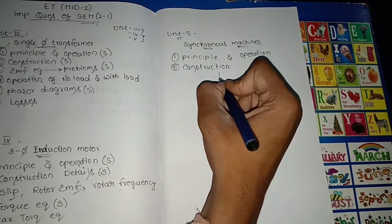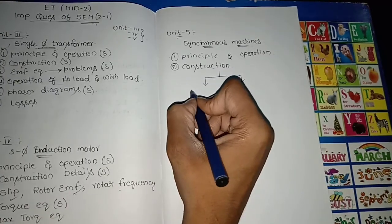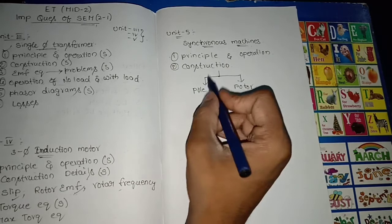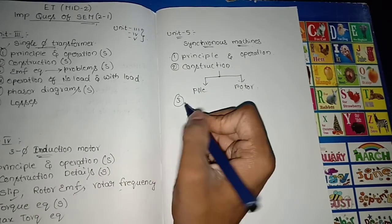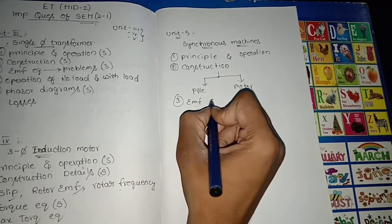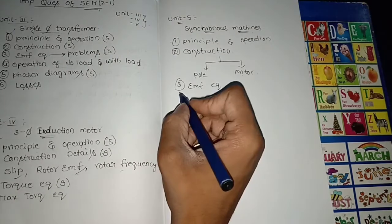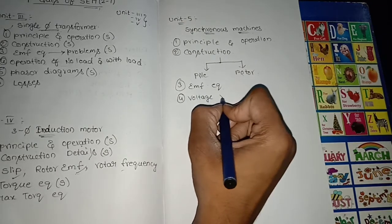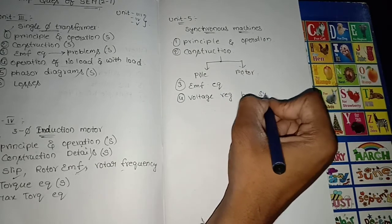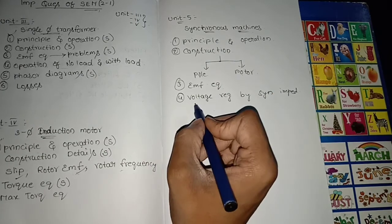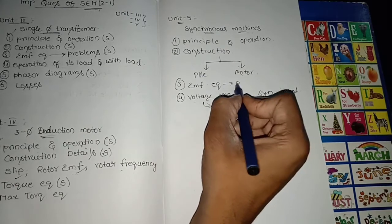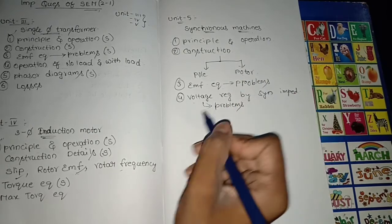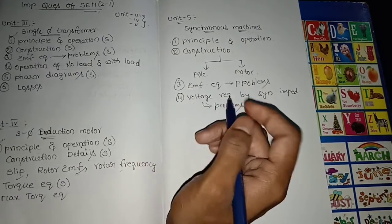For the construction of synchronous machines, we have mainly 2 types: salient pole rotor and round rotor. These 2 types come under the construction topic. The third most important question is the EMF equation of a synchronous machine. The fourth most important question is voltage regulation by synchronous impedance, which is a very most important question that also includes problems.